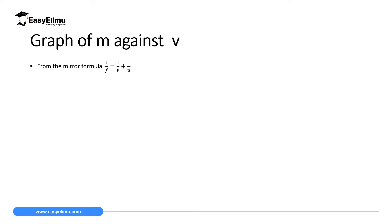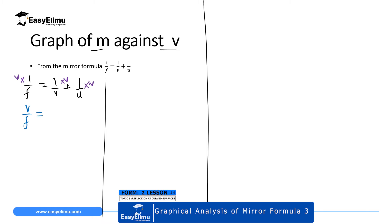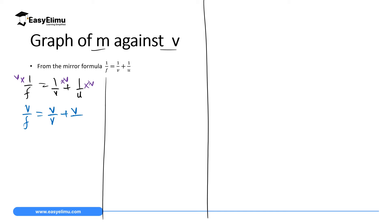The graph we are going to analyze is a graph of magnification against v. From the mirror formula, if we have 1/f = 1/v + 1/u, and we multiply all terms by v, our mirror formula becomes v/f = v/v + v/u.